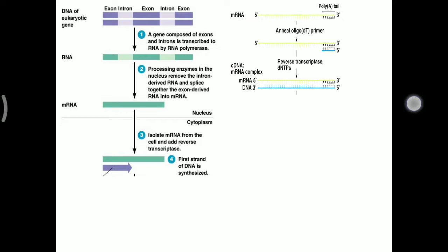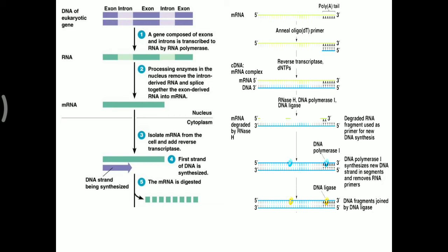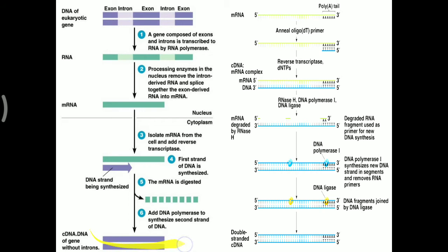Once the oligo-dT primer is added, reverse transcriptase enzyme and deoxynucleoside triphosphates are added, generating a complementary DNA strand — called the cDNA strand. The mRNA is then degraded by the enzyme RNase H, leaving only the single cDNA strand. Over that strand, another DNA strand is made with DNA polymerase I and ligase enzyme, so finally a double-stranded complementary DNA is generated.